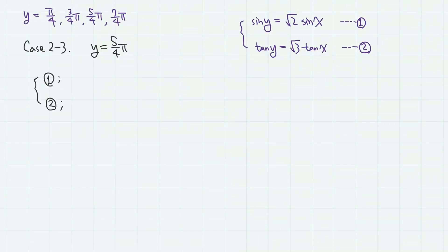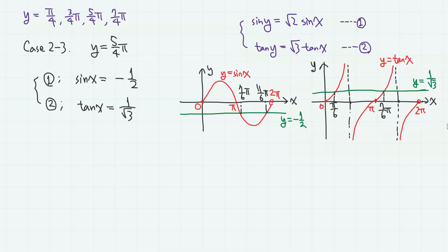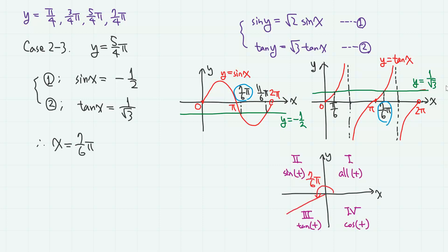For the next case, when y equals 5π/4, we have sine x equals minus 1/2 and tangent x equals 1 over square root of 3. Now we have x equals 7π/6. As can be inferred from the negative sine value and positive tangent value, x is a third-quadrant angle. So the root is (7π/6, 5π/4).